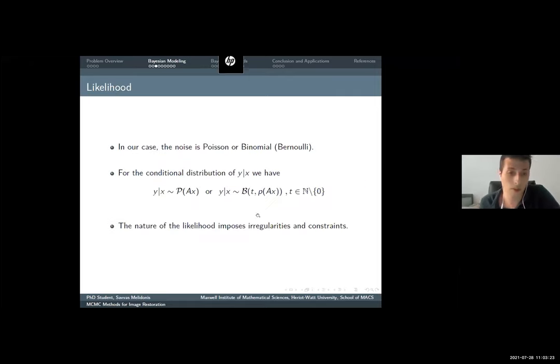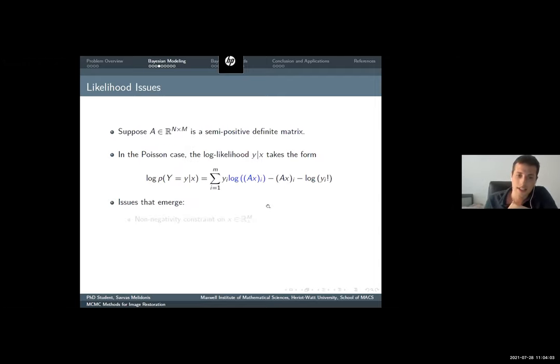In my problem, Y given X will be given from a Poisson distribution where the mean will be given from the measurement operator. Or it would be from binomial distribution, or more particularly it could be Bernoulli if T here would be equal to 1. The probability will be given from the measurement operator again.